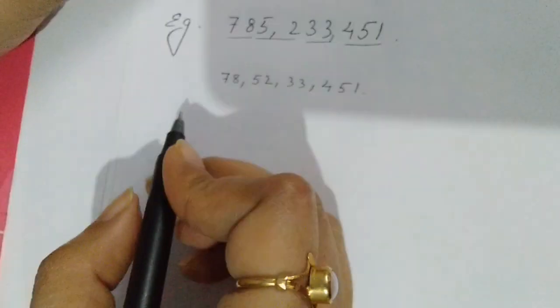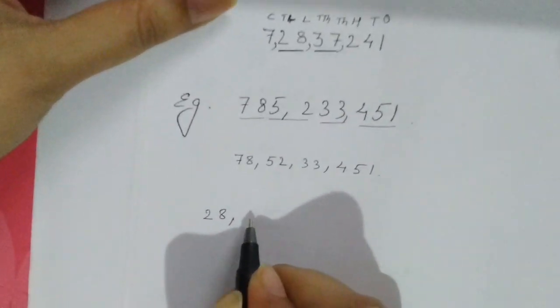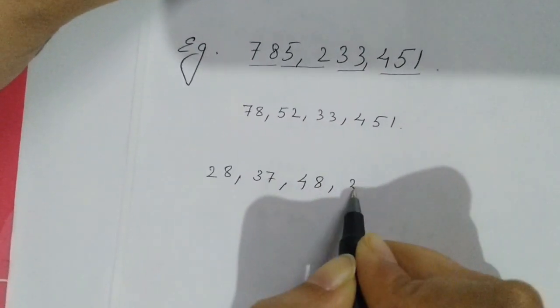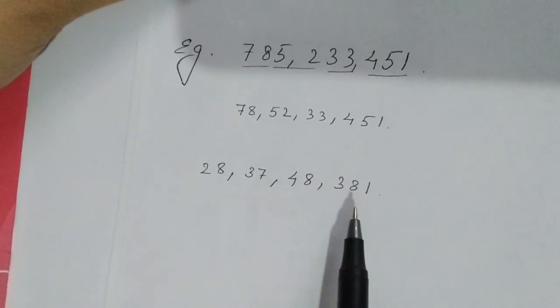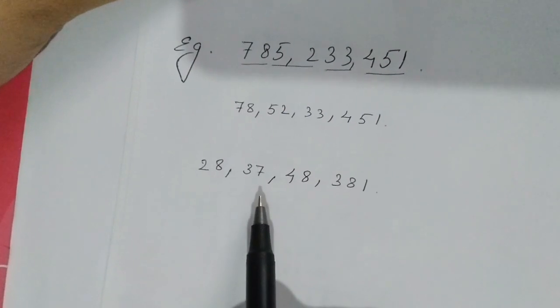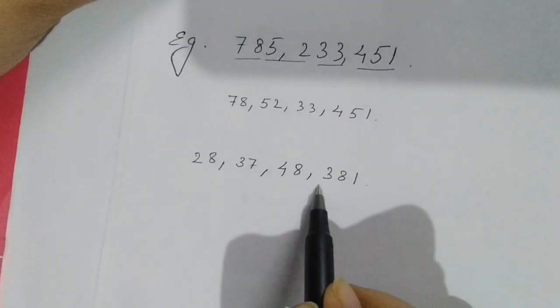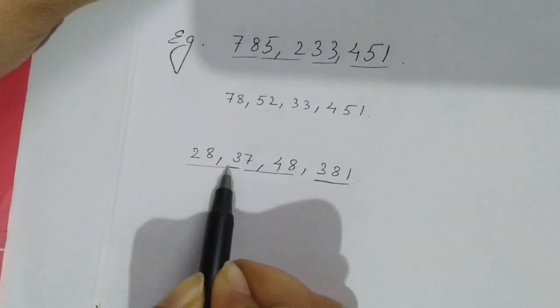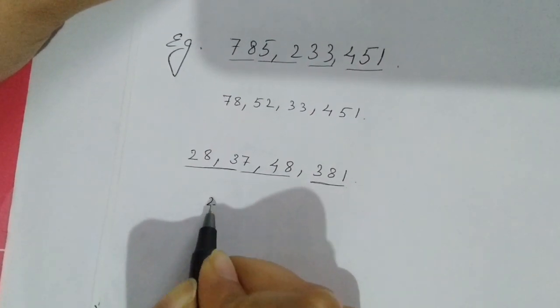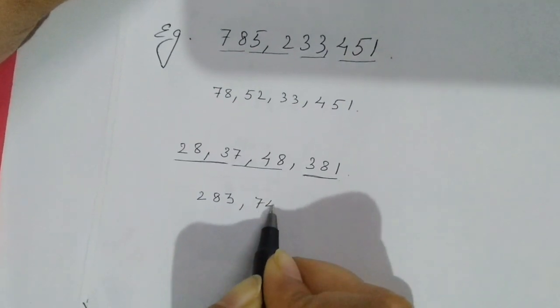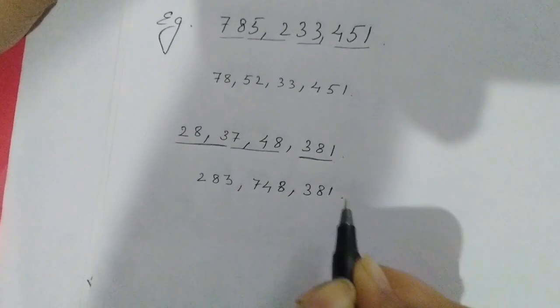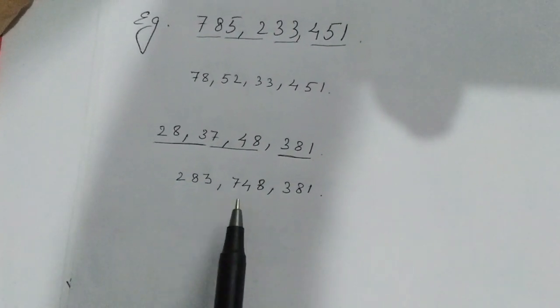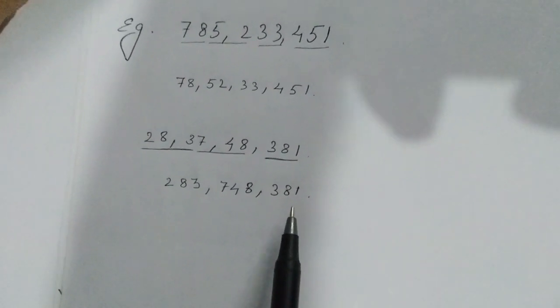Similarly, to convert a number from Indian to international number system, we follow the same methodology but underline three digits together for each period. The first three digits form one group, the next three digits another group, and the last three digits the final group. Reading the result in the international system: two hundred eighty-three million, seven hundred forty-eight thousand, three hundred eighty-one — that is 283,748,381.